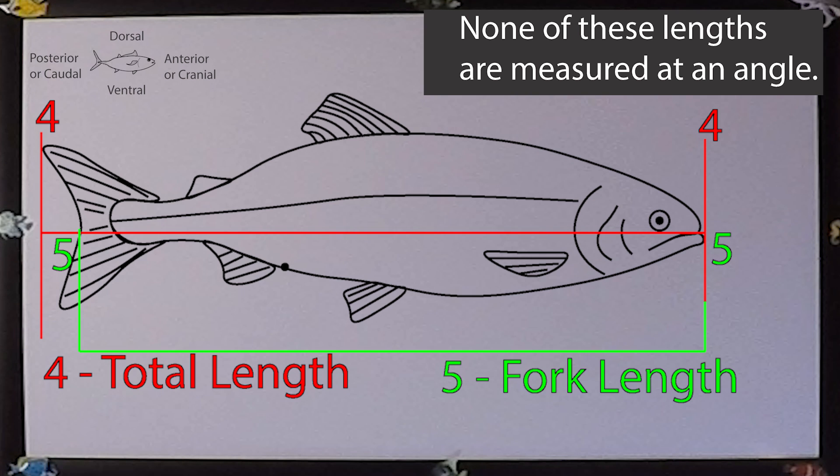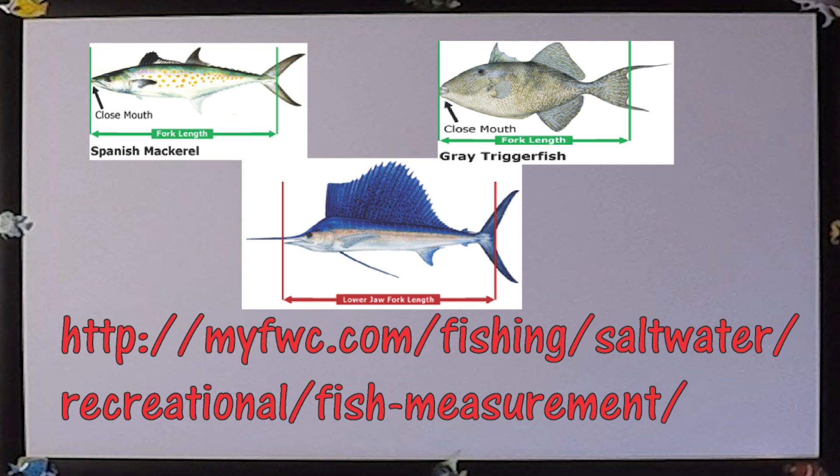Fork length. Often times your local gaming officials will ask you that you measure fork length for certain species. This is the measurement from the most anterior part of the snout, or mouth, to the central caudal race. The Florida Fish and Wildlife Conservation Commission has some poignant illustrations to aid.